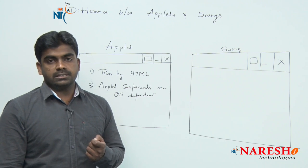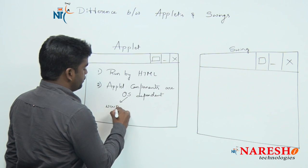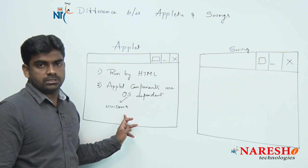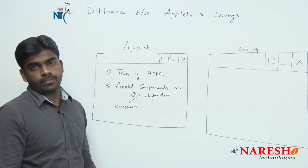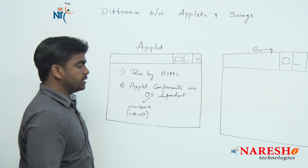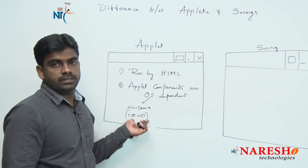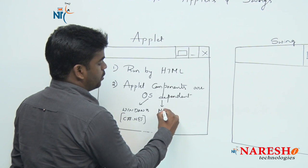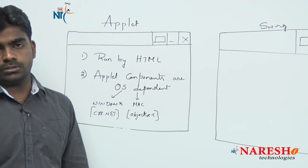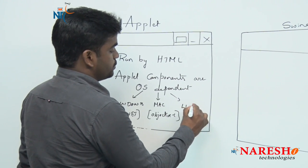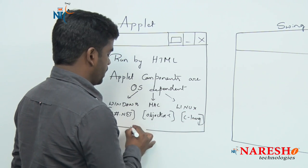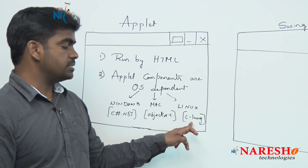For example, if your operating system is Windows and you create one button, it will use that native operating system logic — Windows operating system logic. Suppose Windows is developed using C# .NET, so here in the Java program we use the logic of C# .NET. If we are using Mac, which is developed using Objective-C, it will use Objective-C logic. If you are developing an application on Linux, and Linux is developed using C language, it will use that C language code to create the component.